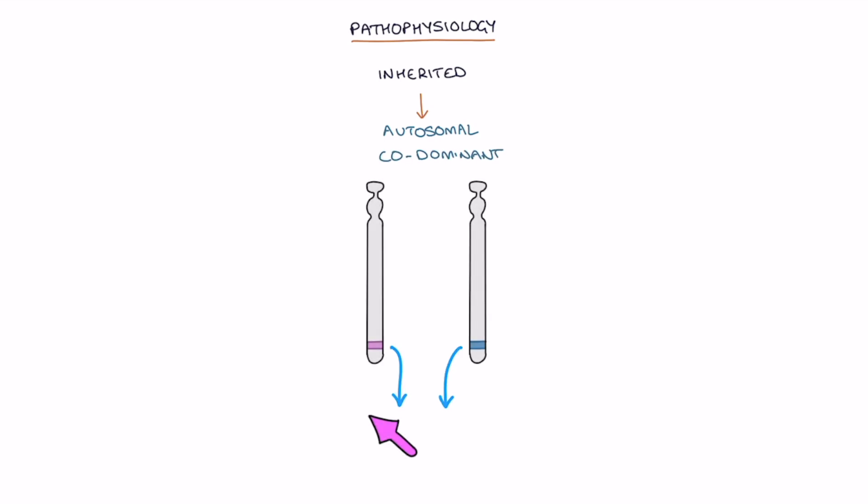Alpha-1 antitrypsin deficiency is inherited in an autosomal codominant pattern. Codominant refers to when both gene copies are expressed and contribute to the outcome, neither copy is dominant or recessive over the other. The disease severity results from the combination of both copies of the gene.